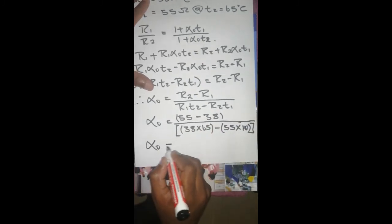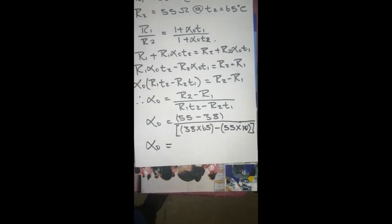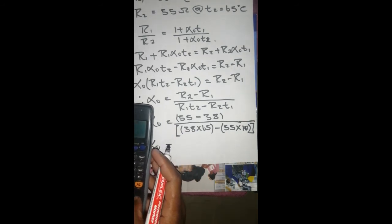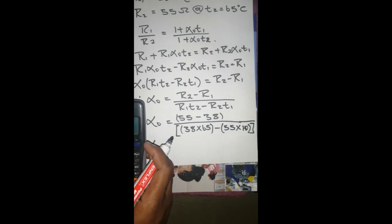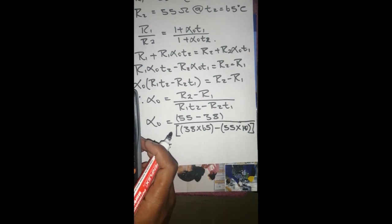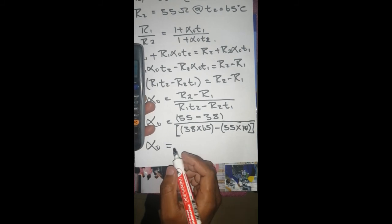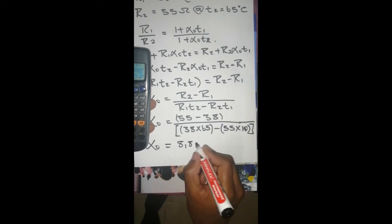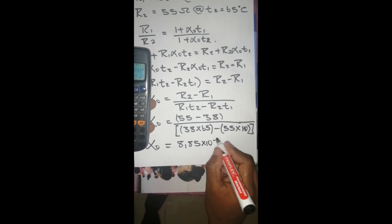So punching this into the calculator, let's see what we get: 55 minus 38 over 38 times 65 minus 55 times 10. And we get 8.85 times 10 to the power negative 3.